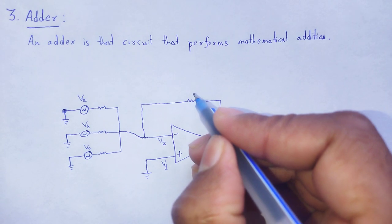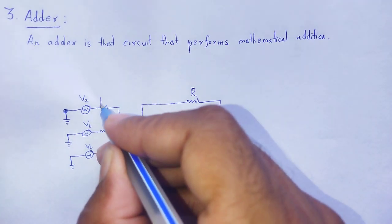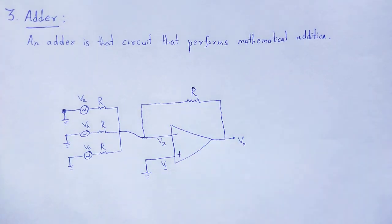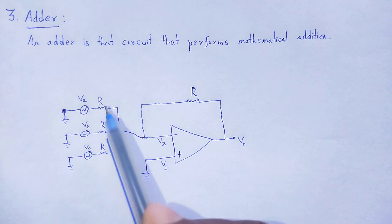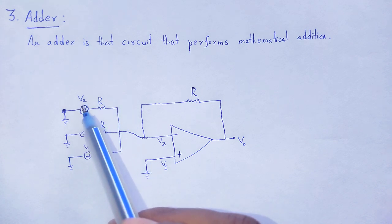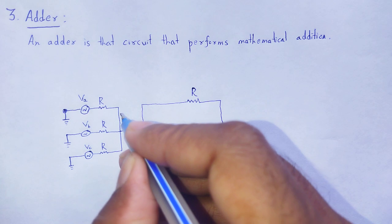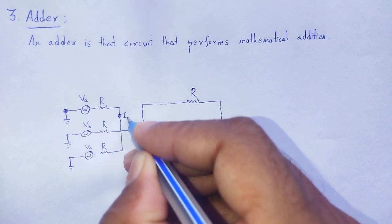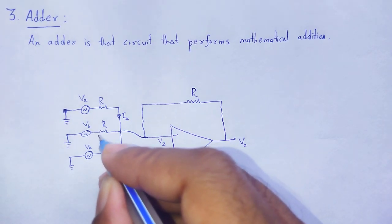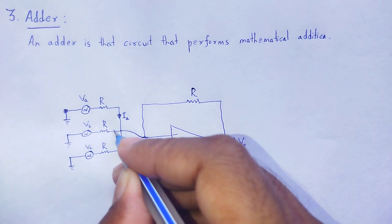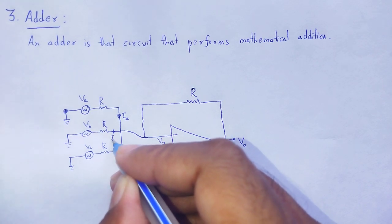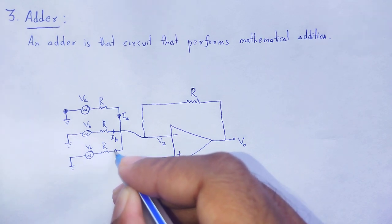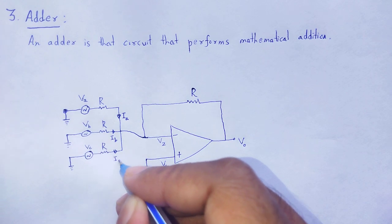By using the op-amp, all resistors are of the same resistance R. There are resistances R at each input and R as the feedback resistance. The amount of current from signal V-A is I-A, from signal V-B is I-B, and from signal V-C is I-C.